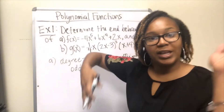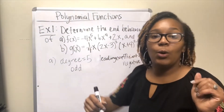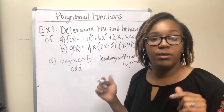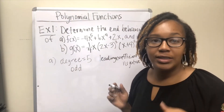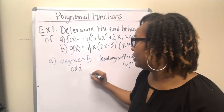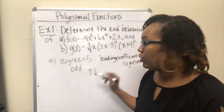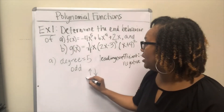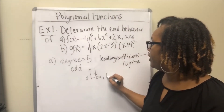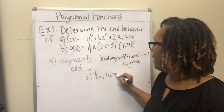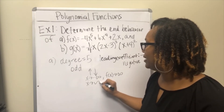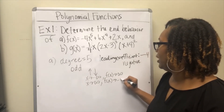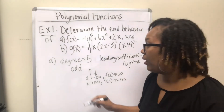So for Part A, the end behavior is: as x → -∞, f(x) → +∞, and as x → +∞, f(x) → -∞. The end behavior diagram shows an arrow going up on the left and down on the right.